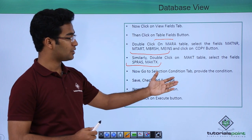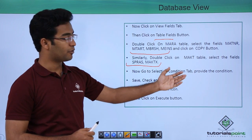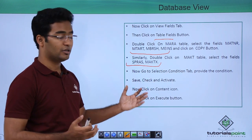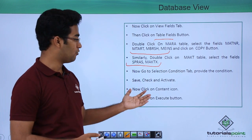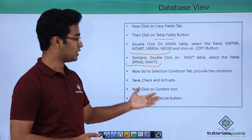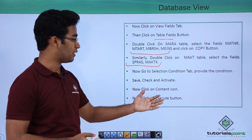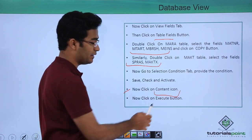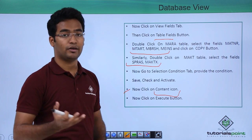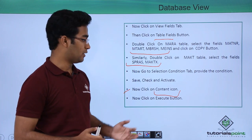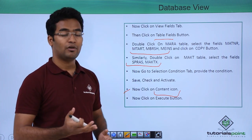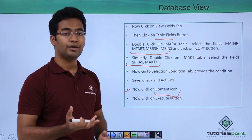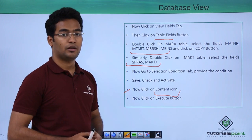Then we go to the selection condition tab and provide our condition. Based on this we save it, check it, and activate it. Then we click on the content icon and execute. Our view will be created based on these two tables.